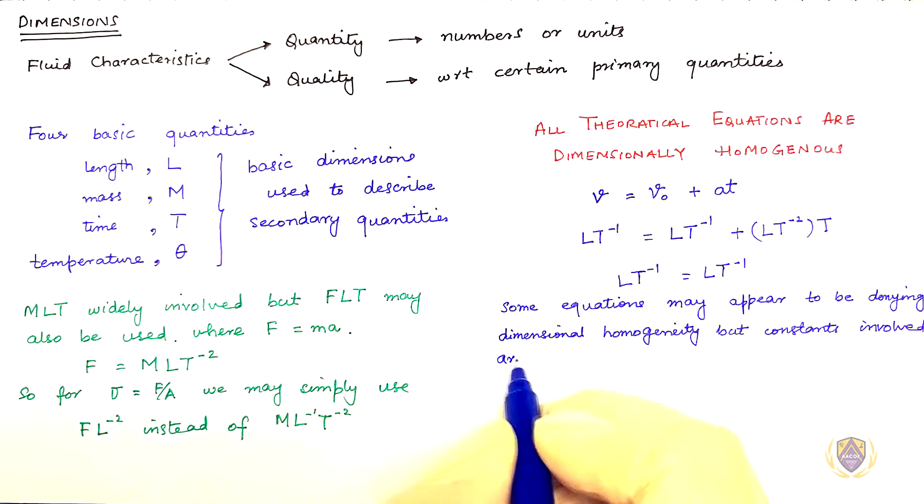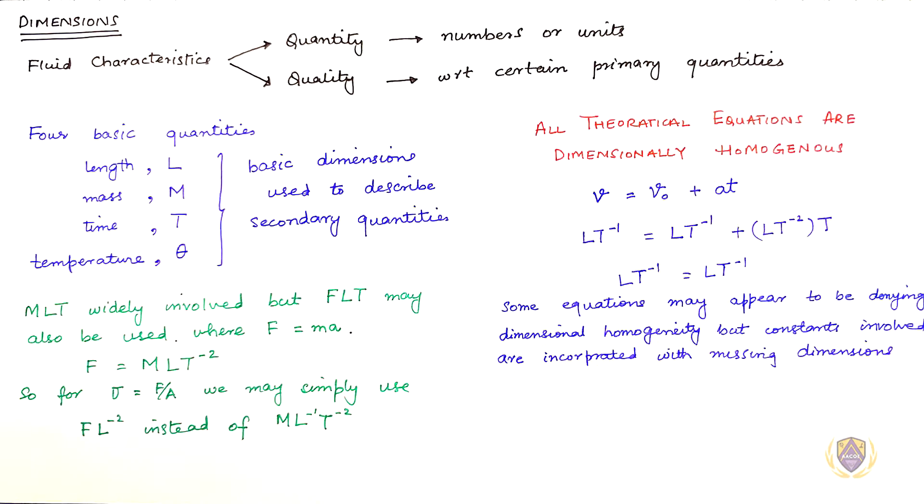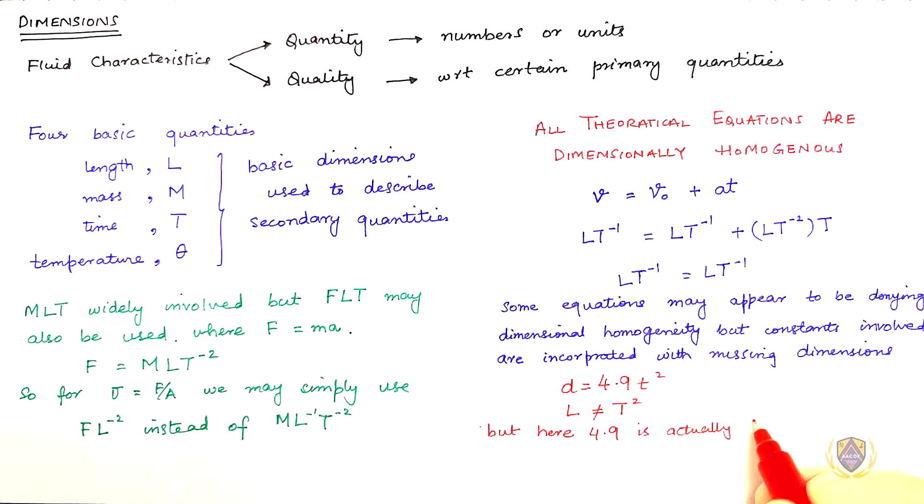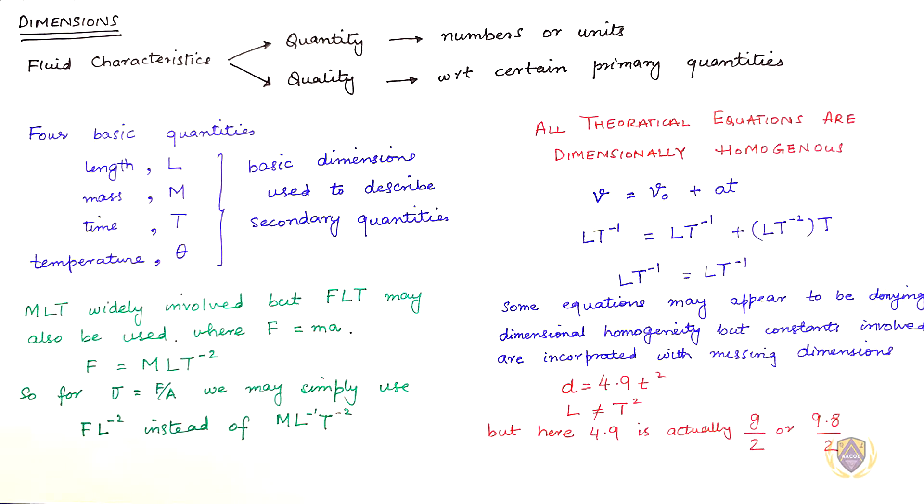Some equations may appear to be denying dimensional homogeneity, but the constants involved are incorporated with missing dimensions. Distance traveled by a free-falling body is given by D equals T square. Note that dimensionally L is not equal to T square, but here 4.9 is actually half of acceleration due to gravity.